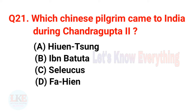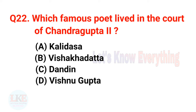Question 20 and 21: Which Chinese pilgrim came to India during the reign of Chandragupta II? Options include: A — Xuanzang, B — Ibn Battuta, C — Seleucus, D — Fa Hien. The right answer is option D — Fa Hien. Question 22: Which famous poet lived in the court of Chandragupta II? Right answer: option A — Kalidasa.